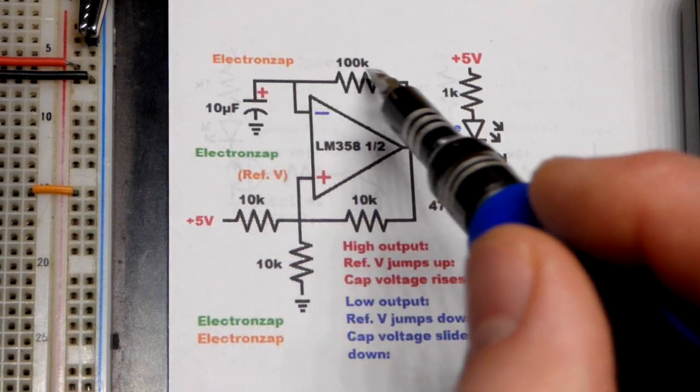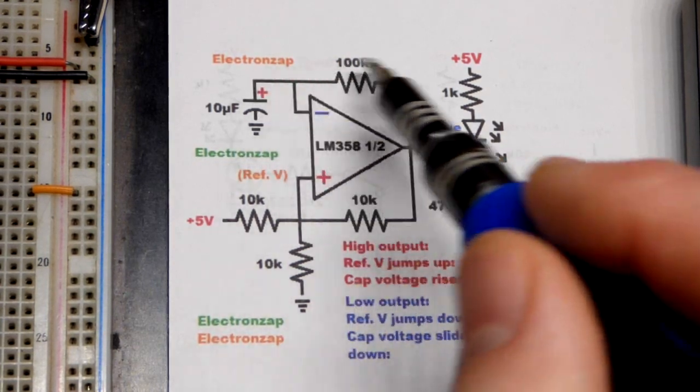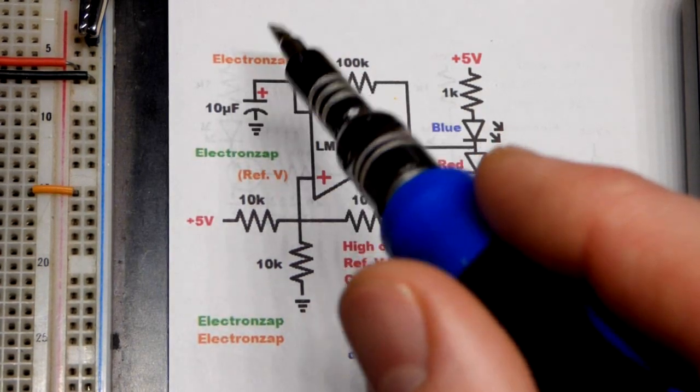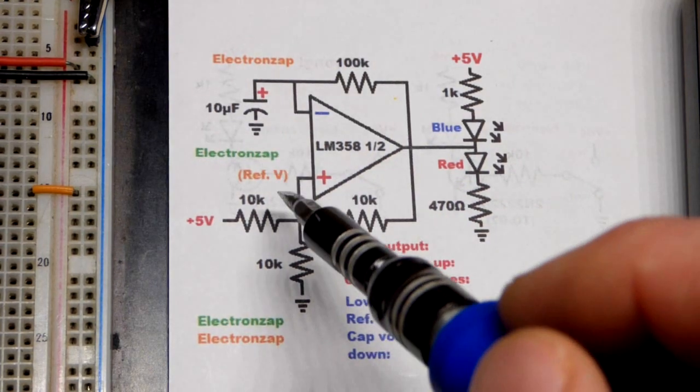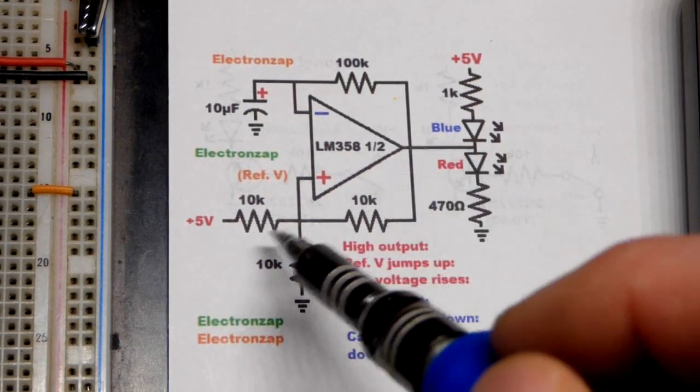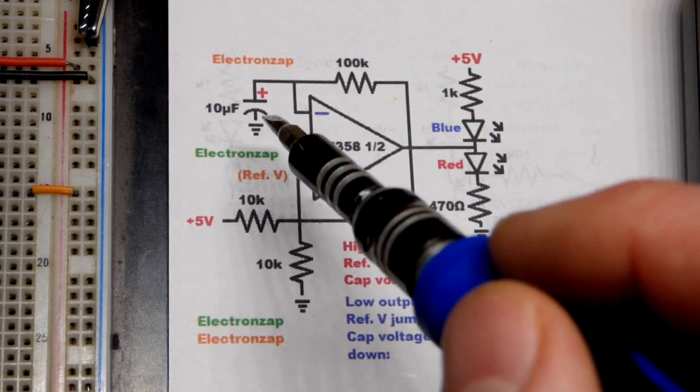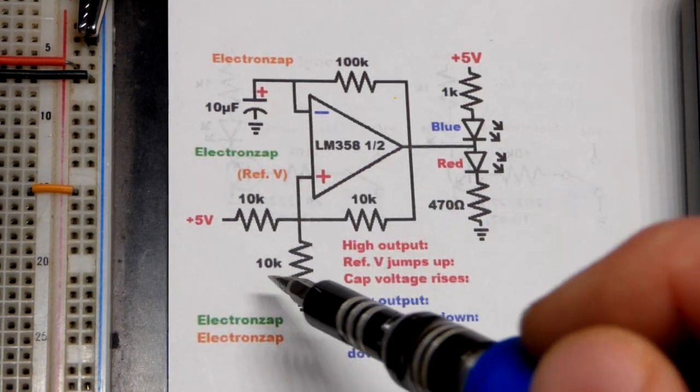But now this is low, so it's going to start discharging the capacitor through the output there. So it's going to drop its voltage until it gets to that new low. And then the output goes high. And then the capacitor has to charge to a higher voltage to get back there. It just keeps bouncing back and forth.